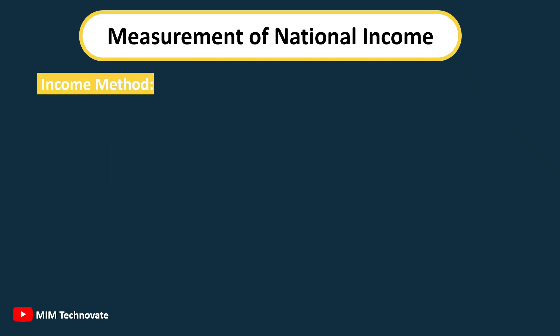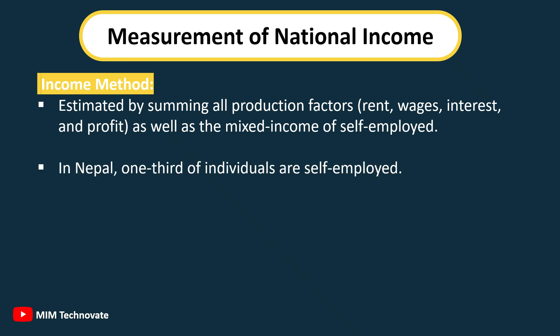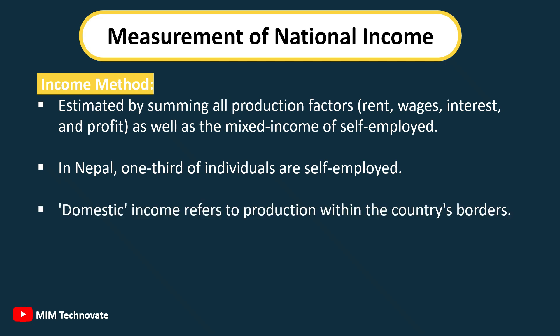Measurement of national income by the Income Method is estimated by summing all production factors — rent, wages, interest, and profit — as well as the mixed income of the self-employed. In Nepal, one-third of individuals are self-employed. Domestic income refers to production within the country's borders.